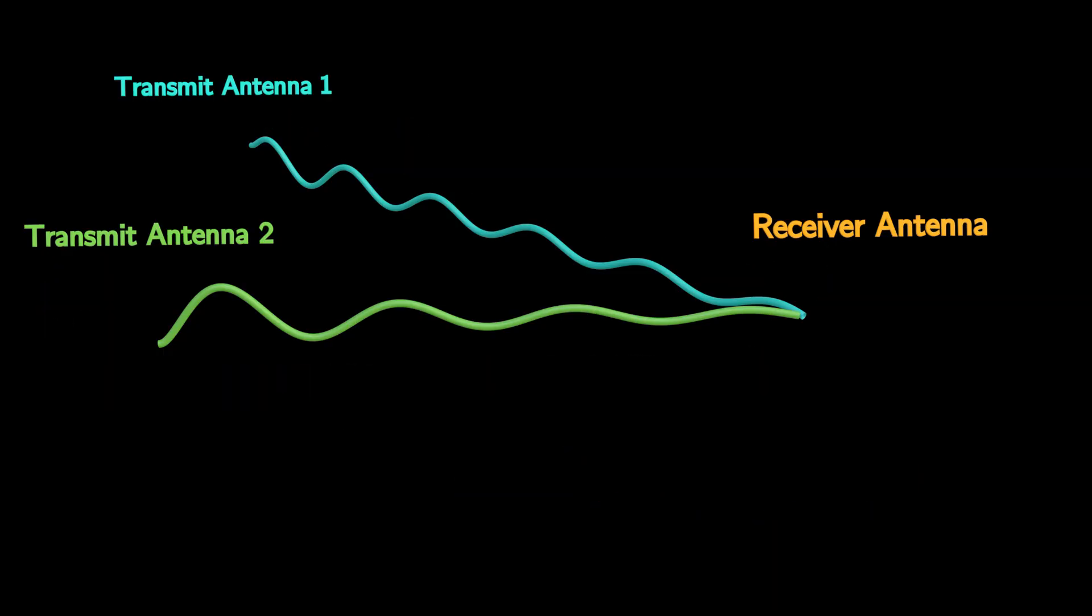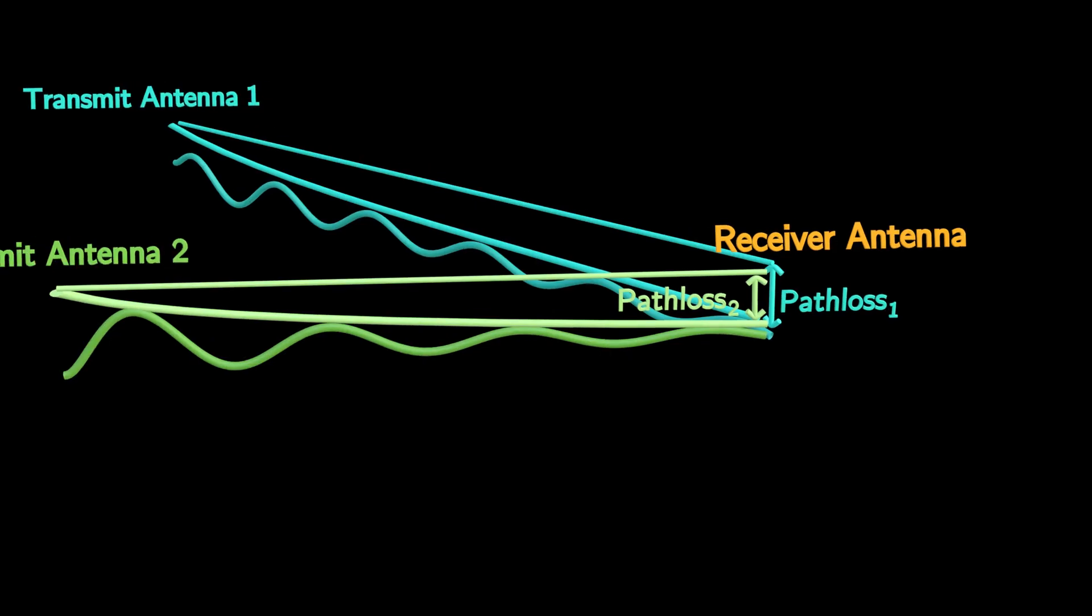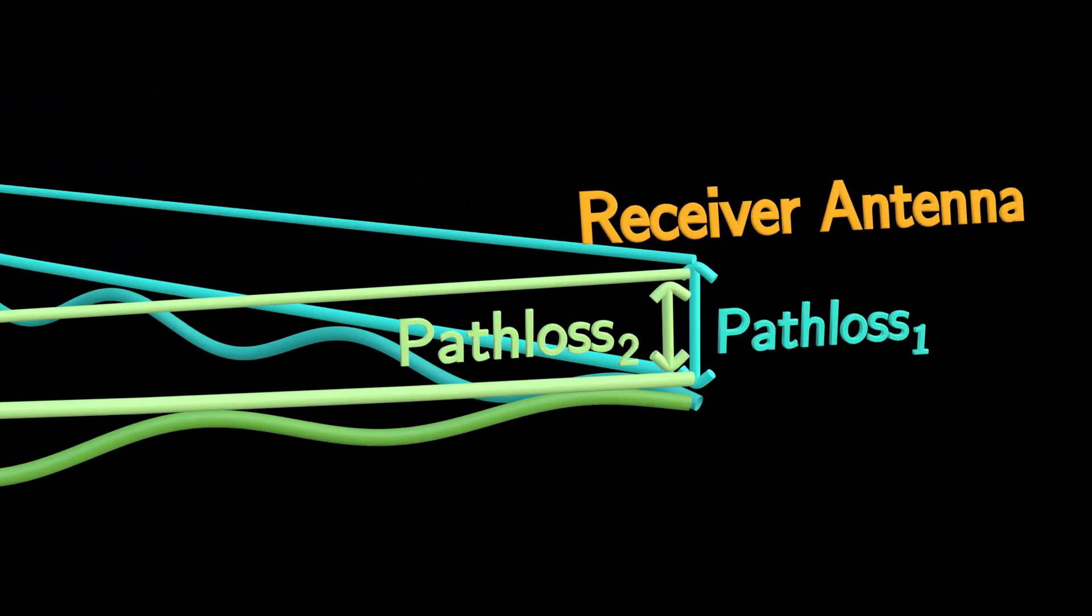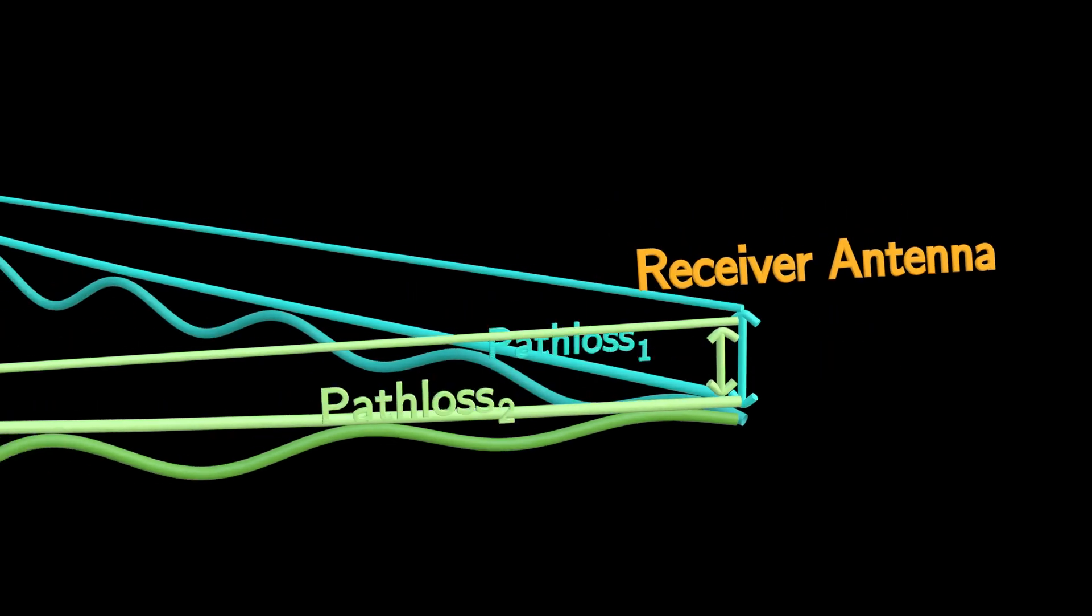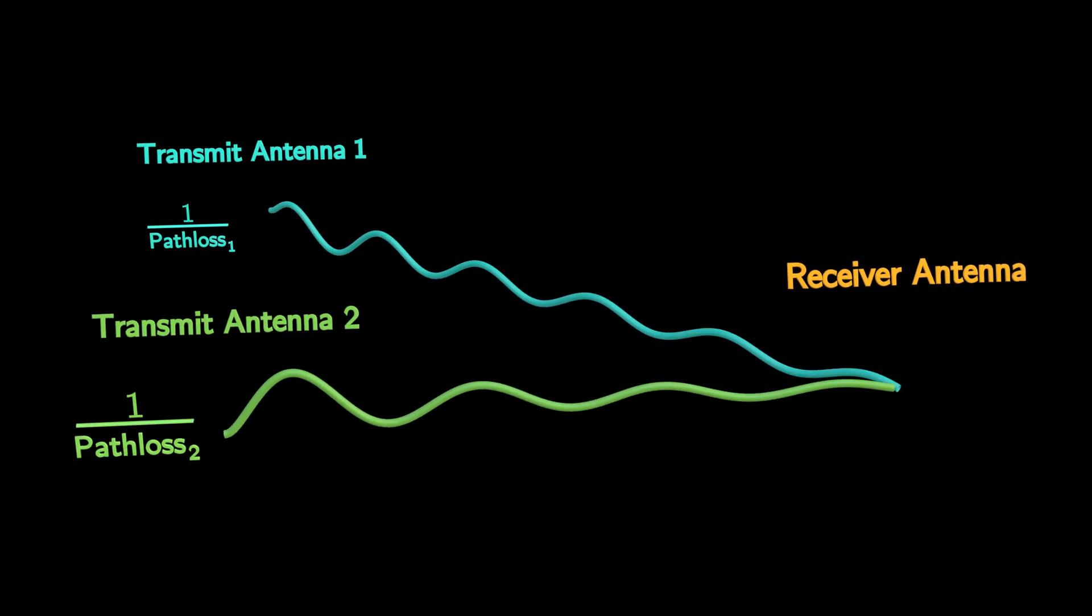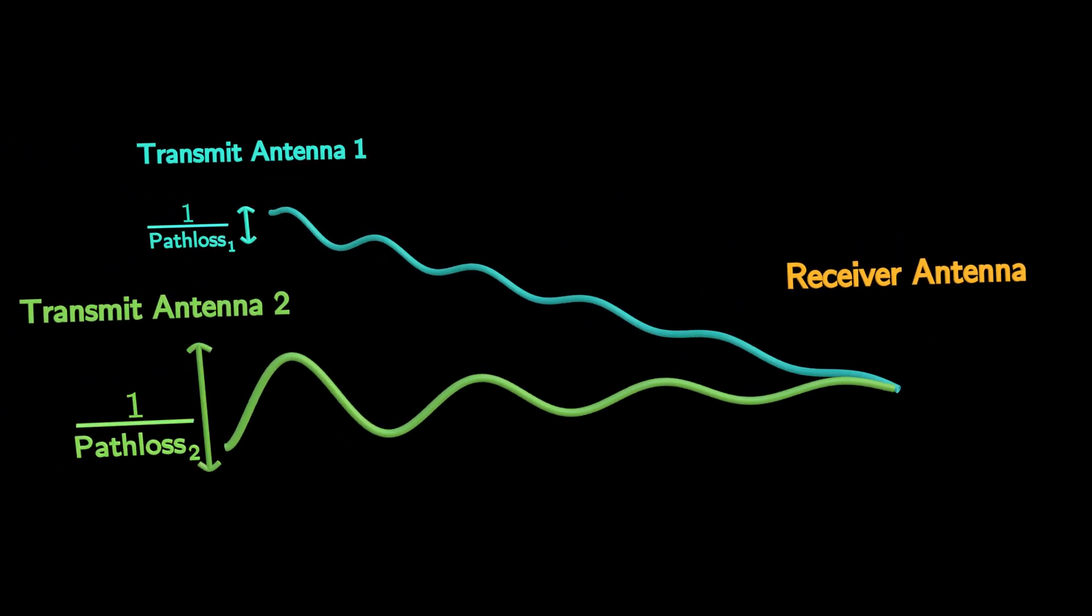To further maximize the signal strength, the transmitter can first measure the path loss of each signal path, then adjust each antenna's transmit power to be inversely proportional to its path loss while keeping the total power the same.